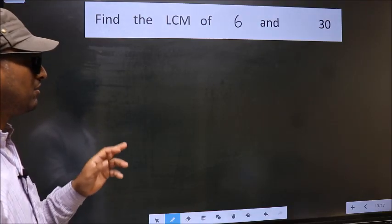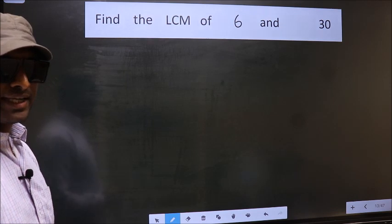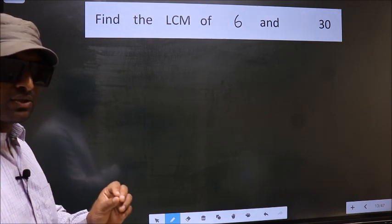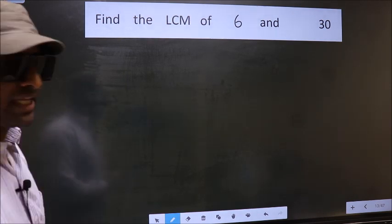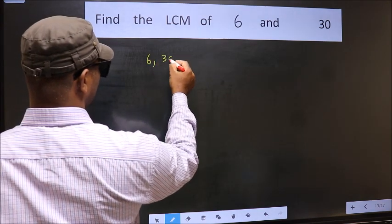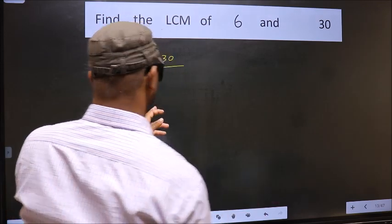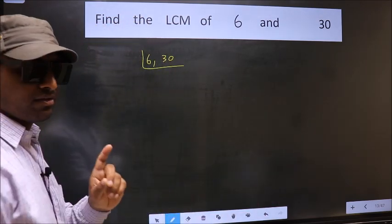Find the LCM of 6 and 30. To find the LCM, first we should frame it in this way. That is 6, 30. This is your step 1.